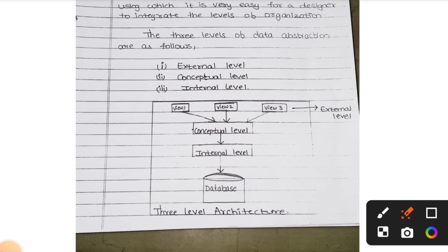External level is the top level - we see only the top level. The bottom level we should not see; we are not authorized persons to see it. When you search your results, you will get only your results - you should not be able to see other results if you are not having their hall ticket number. That is the external level.